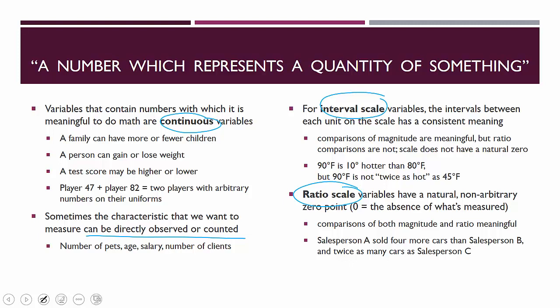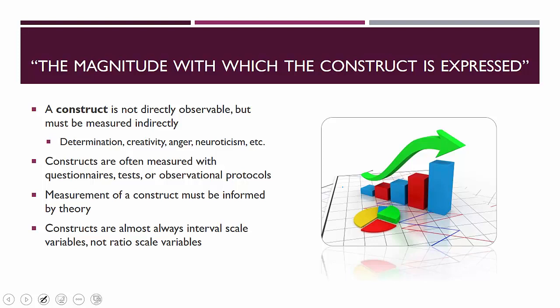When you have a continuous variable that counts up a quantity of something, that's what a ratio scale looks like. But we might also have the magnitude with which a construct is expressed. Constructs are not directly observable, so they have to be measured indirectly. Many of these are psychological in nature. When we talk about how determined a person is, if we come up with a way to measure determination, that's the construct — we assign a number to it. It doesn't make inherent sense to say a person has a determination of 24 except in reference to an instrument that measures it. We can do the same with creativity, anger, neuroticism, or any other psychological construct.